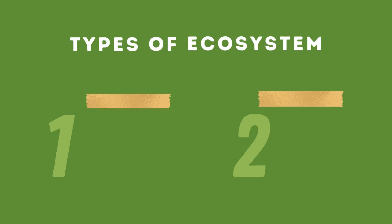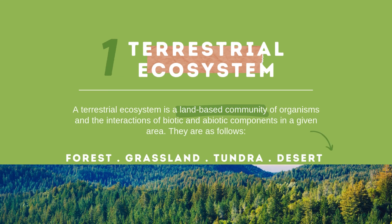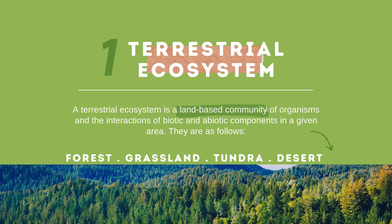Coming to types of ecosystem, there are two types of ecosystem: terrestrial and aquatic. A terrestrial ecosystem is a land-based community of organisms and the interactions of biotic and abiotic components in a given area. The types are as follows: first, forest; second, grassland; third, tundra; and fourth, desert.